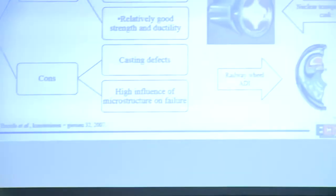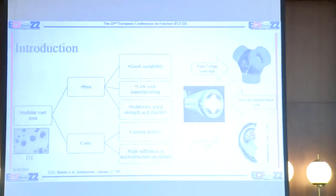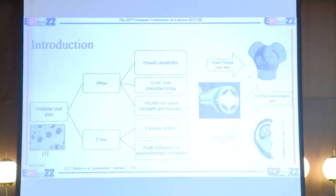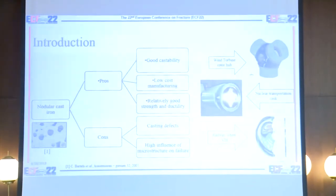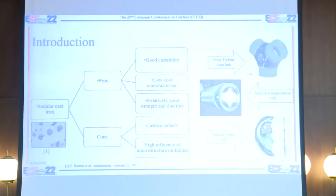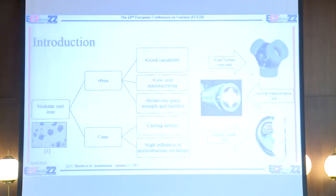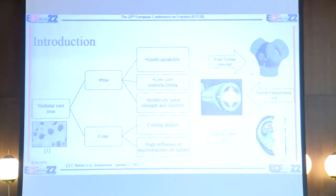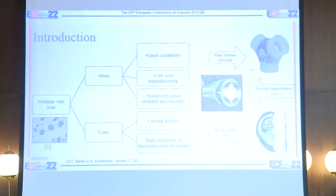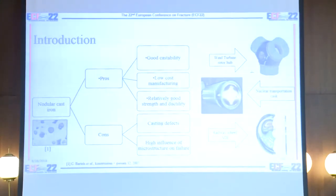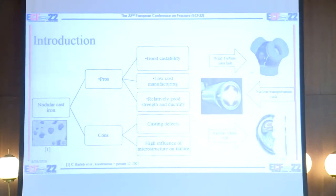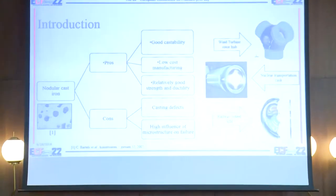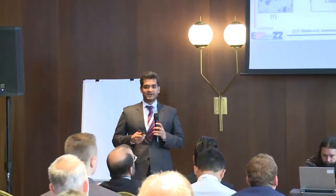Nodular cast iron is widely used for different applications like wind turbine water hubs, nuclear and transportation and storage casks, railway wheels, gear boxes, crankshafts, and more. It has very good interesting properties: very good castability, good mechanical strength and ductility, but at reduced low manufacturing cost compared with engineering steels.